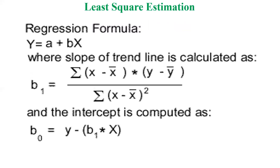Least square estimation is used to observe the difference between actual and predicted values. With the equation y = a + bx, the slope b of the trendline is calculated as: b = Σ(x − x̄)(y − ȳ) / Σ(x − x̄)², where x̄ and ȳ are the means of x and y respectively. The intercept a is computed as: a = ȳ − b·x̄.